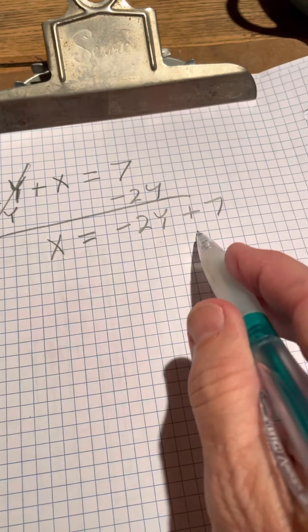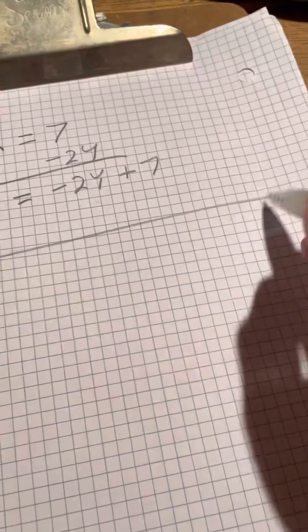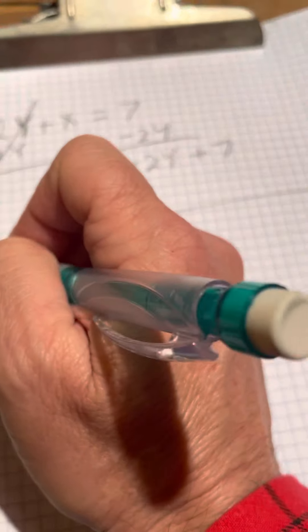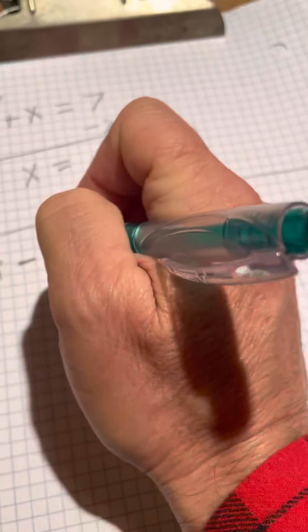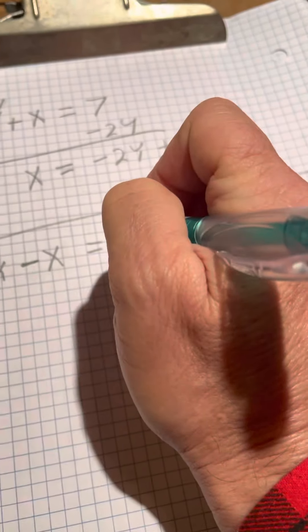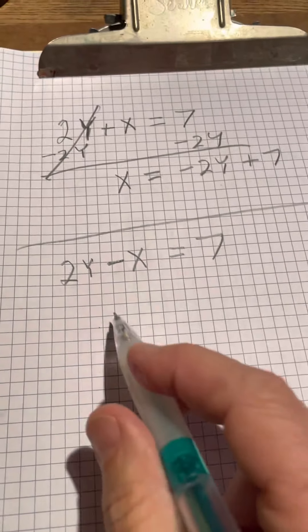Now does it say x equals? Yes. Let me give you another example. If it said 2y minus x equals 7, all I do is switch this, just because sometimes this will happen.